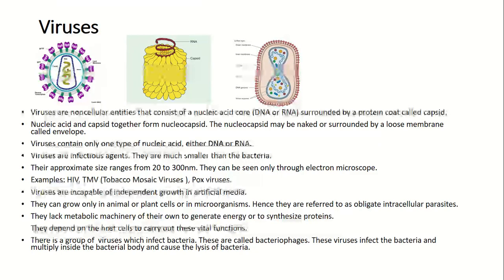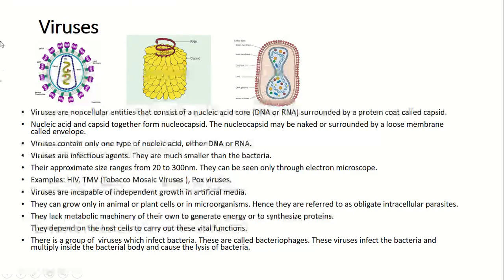Viruses are infectious agents. They are much smaller than bacteria, with an approximate size ranging from 20 to 300 nanometers. They can be seen only through an electron microscope — for example, HIV, TMV, and pox viruses. Viruses are incapable of independent growth in artificial media; they can grow only in animal cells, plant cells, or microorganisms.